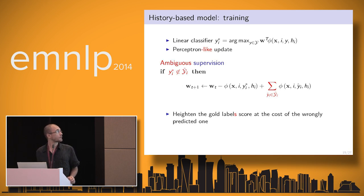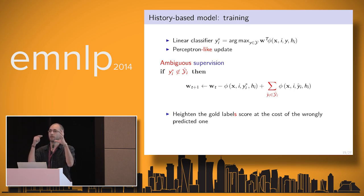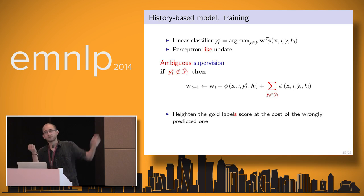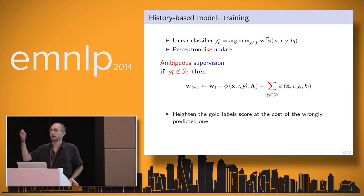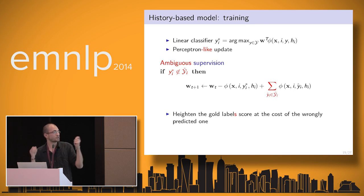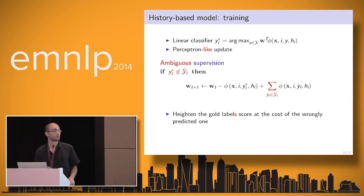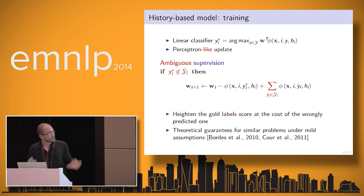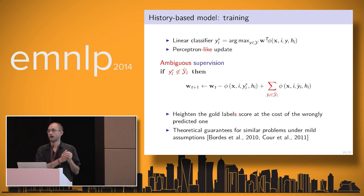The problem is that we don't have the gold label — we only have an ambiguous set. The idea is: we don't know which one is the gold label, but we try to ensure that all the labels in the reference set are scored better than the predicted one. If the predicted label is not in the reference set, we do the update: we increase features for the labels in the tag set and decrease features for the predicted one. For similar problems, there are theoretical guarantees that this will allow learning well on these problems.